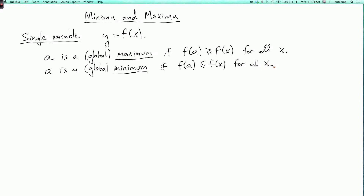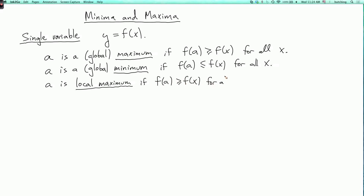These may or may not exist — we'll see examples where they do and where they don't. We also say that a is a local maximum if f of a is greater than or equal to f of x for all x in a neighborhood of a.